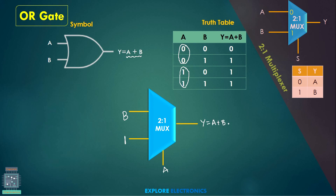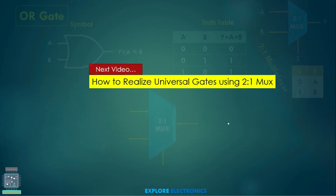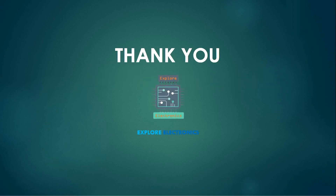This completes the implementation of basic gates using a 2-to-1 MUX. In a similar way, we can implement other gates also. I will discuss in my next video how to realize universal gates using a 2-to-1 multiplexer. Thank you.